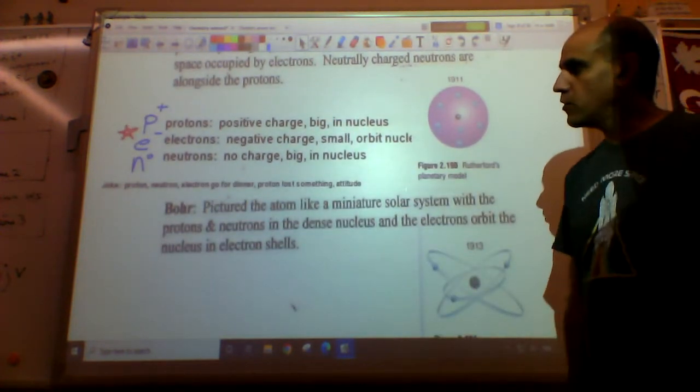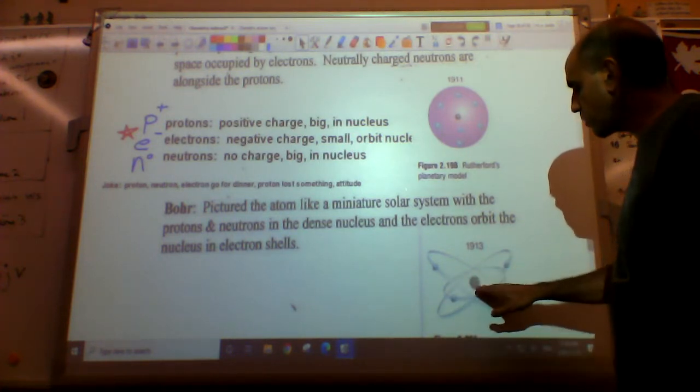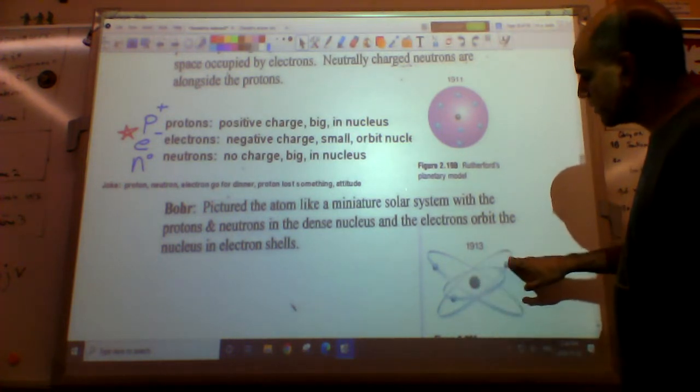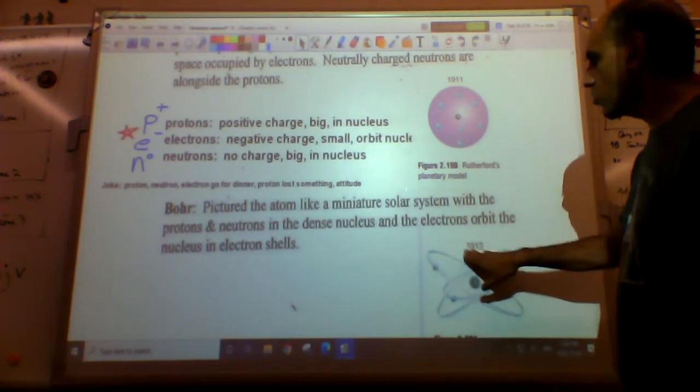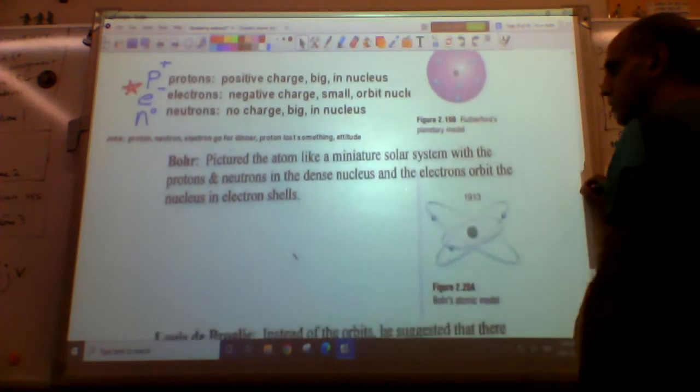Bohr takes that model and goes one step further and says, you know what? The electrons, the protons and neutrons are in the nucleus, but the electrons kind of go in orbits like the planets orbit around the sun. And so that's Bohr's model.